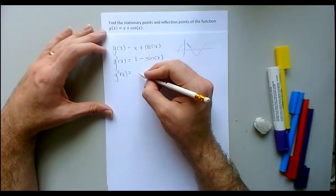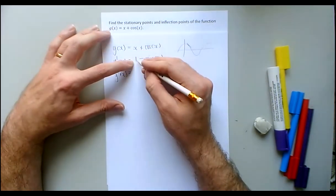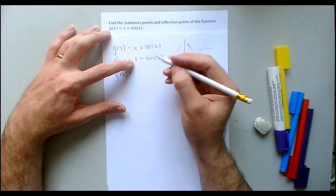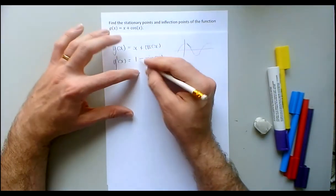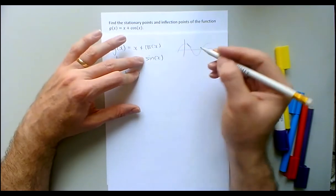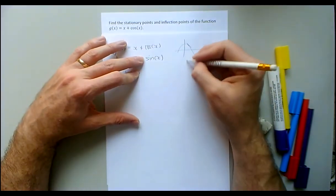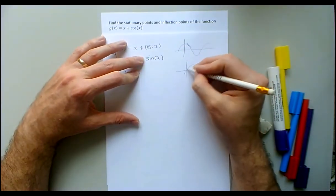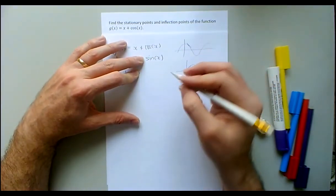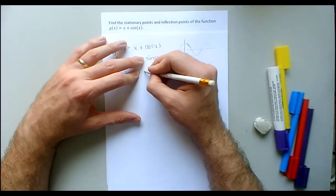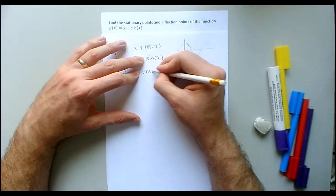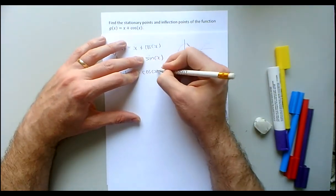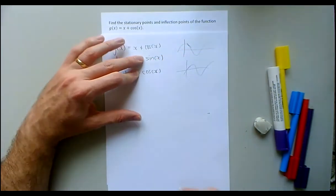Now for g''(x): the 1 becomes a zero, the minus stays, and I need the derivative of sin(x). Sine starts out with a positive derivative, so it'll be just cos(x), not minus cos(x). So g''(x) = -cos(x).